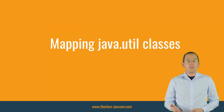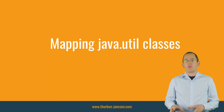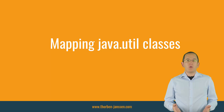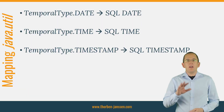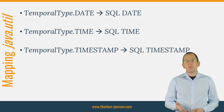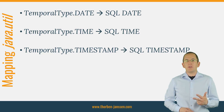Before the release of Java 8, java.util.Date and java.util.Calendar were the most commonly used classes to represent dates with and without time information. You can map both of them with JPA and Hibernate, but the mapping requires a few additional annotations. You need to define if you want to map to a column of type date, time, or timestamp. You can do that by annotating the entity attribute with @Temporal and providing a TemporalType enum value. You can choose between TemporalType.DATE for a SQL date column, TemporalType.TIME for a SQL time column, and TemporalType.TIMESTAMP for a SQL timestamp column.